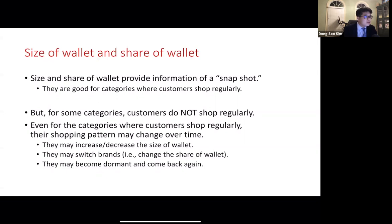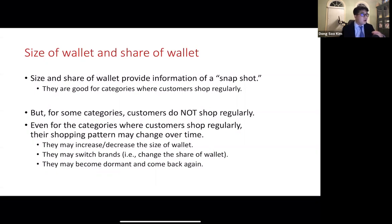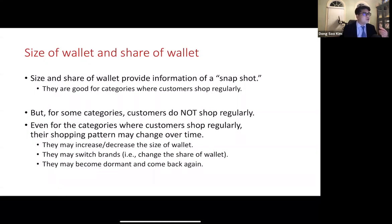But it is not always guaranteed that consumers shop regularly. David, in the example for size and share of wallet, spends only $1,000 per month for grocery shopping, but we don't know what will happen in the future. He may increase or decrease his size of wallet. Customers may switch brands, meaning share of wallet can change. Also, customers may become dormant and come back again. All of these cases are like a boy running in random directions — the snapshots totally differ from each other, and one snapshot cannot describe all of his movement. That is, size and share of wallet at one specific time are not always enough to measure profitability.